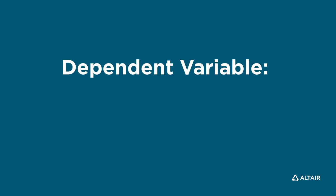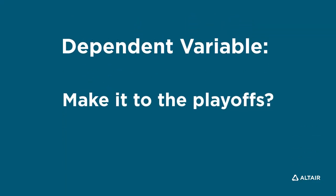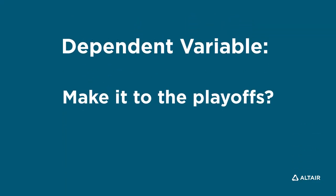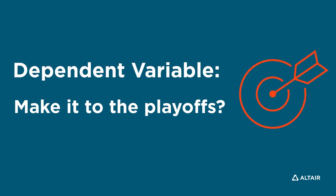Whether a team made it to the playoffs or not is what we call our dependent variable. The dependent variable is the target of the model and what we want to predict.